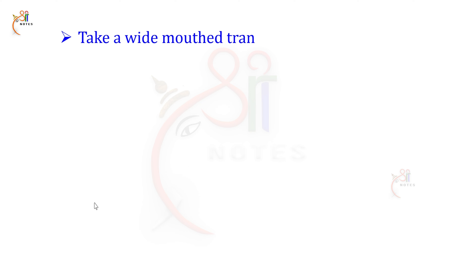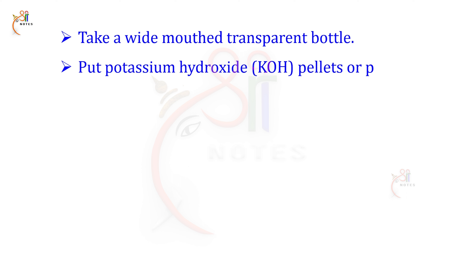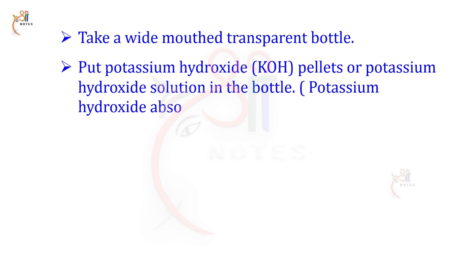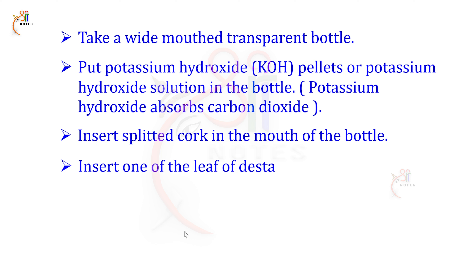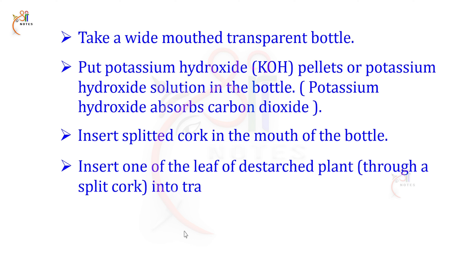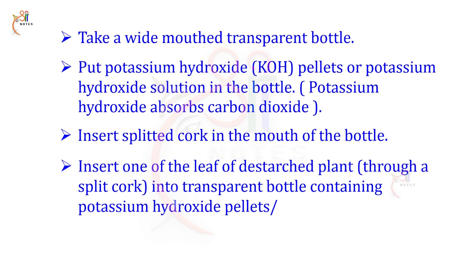Next, take a wide-mouth transparent bottle. Put potassium hydroxide pellets or potassium hydroxide solution in the bottle. Potassium hydroxide absorbs carbon dioxide. So if there is carbon dioxide inside the bottle, potassium hydroxide will absorb it. Insert a split cork in the mouth of the bottle. Then insert one of the leaves of the de-starched plant into the transparent bottle containing potassium hydroxide solution.